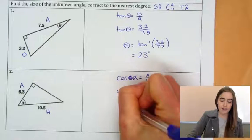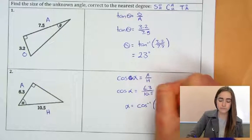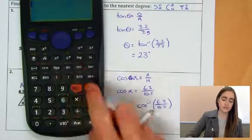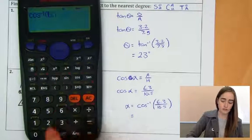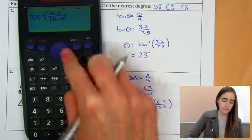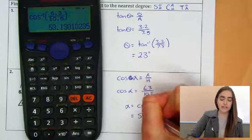So that's going to mean that alpha is equal to cos inverse of that whole fraction. And when we pop that in our calculators, cos inverse of 6.3 over 10.5 to the nearest degree, that would be 53 degrees.